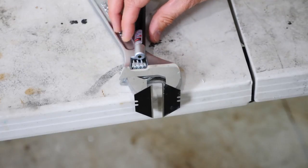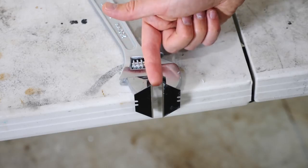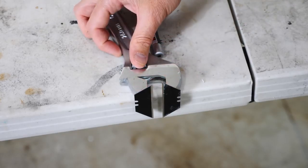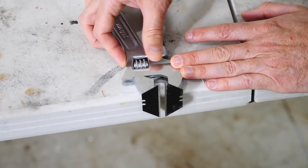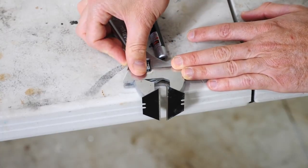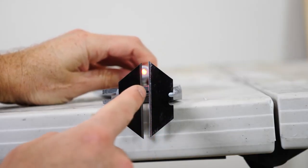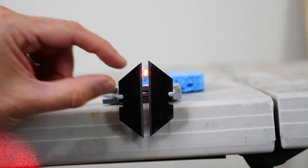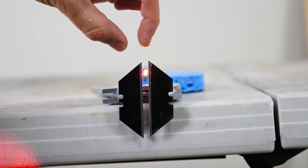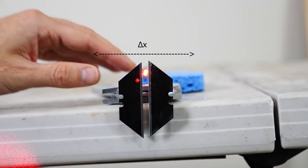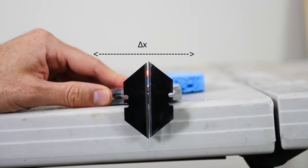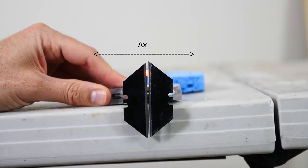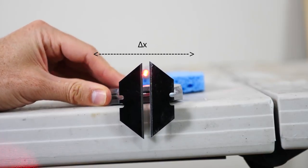The way I'm going to be measuring the position of the photons is by sending it through these two razor blades. And I can get these razor blades closer together or further apart. So what I know is that any light that makes it through these two razor blades had to have gone through in this area. So that means that my delta x is related to the gap between these two razor blades. So I can decrease my delta x by closing it or I can increase it by opening it like this.